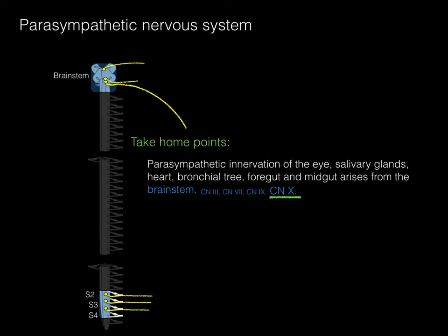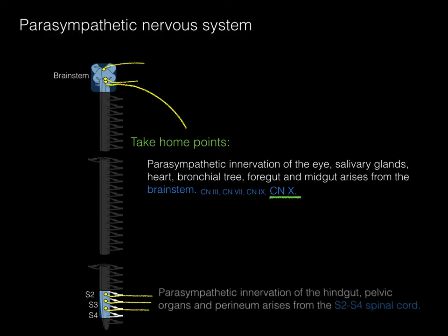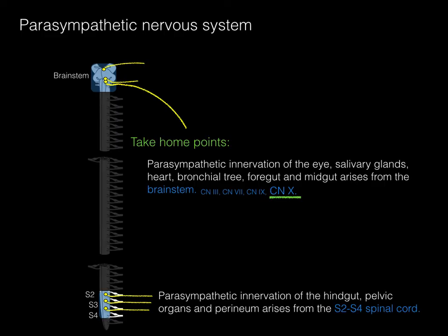Innervation of the eye and some salivary glands comes from cranial nerves 3, 7, and 9 — we'll cover those in great detail in cranial nerves. The parasympathetic innervation of the hindgut, transverse descending sigmoid colon and rectum, pelvic organs such as the uterus and bladder, and perineum such as the penis and clitoris — all of that arises from the S2, 3, 4 levels of the spinal cord.